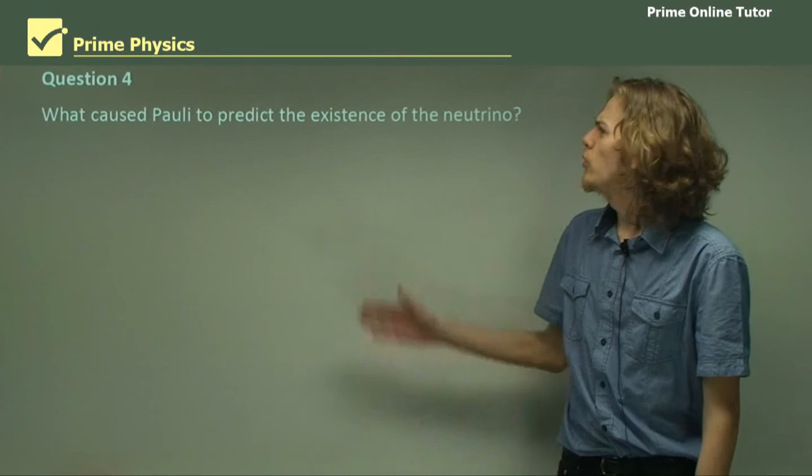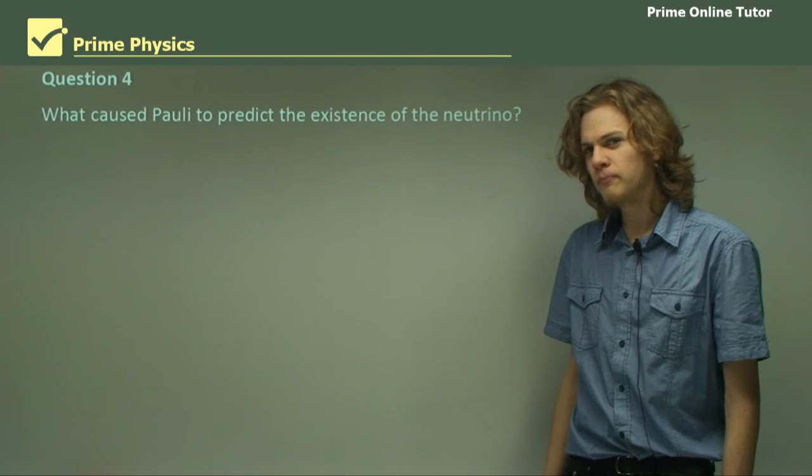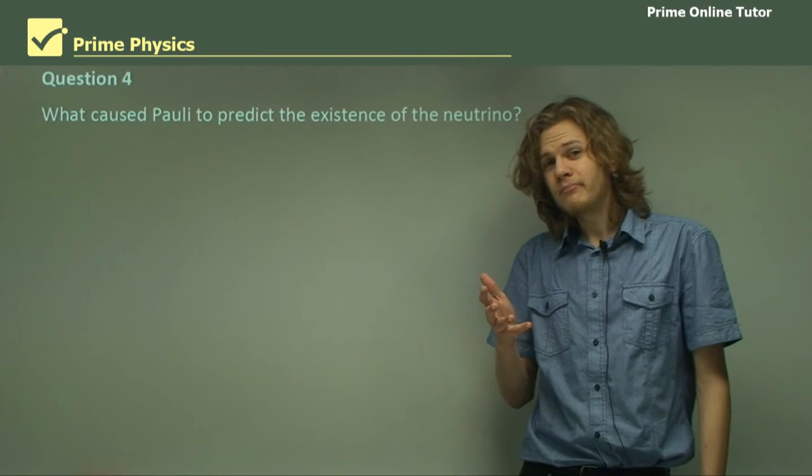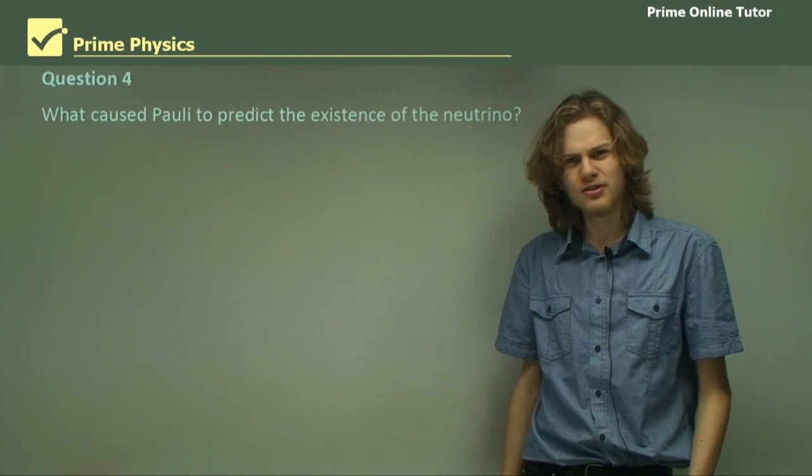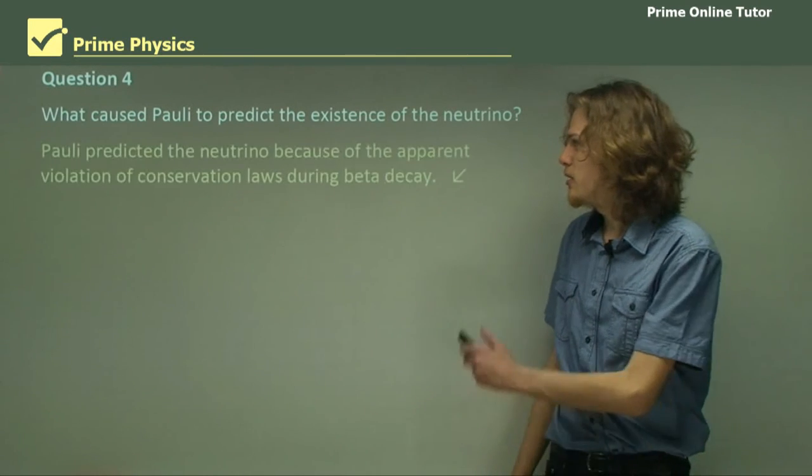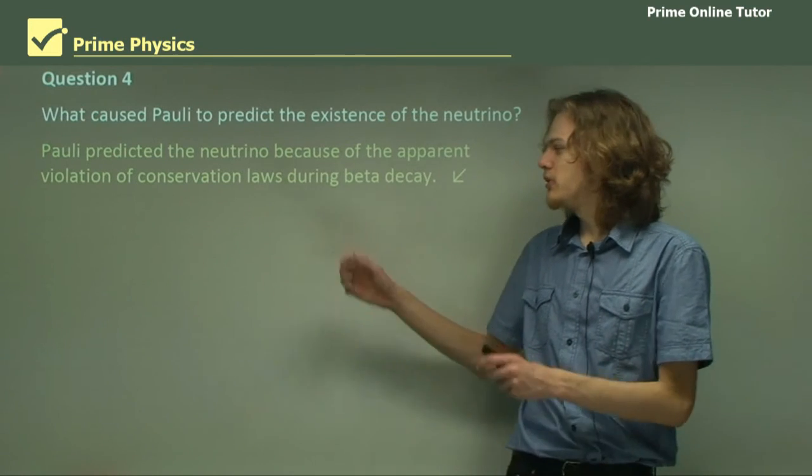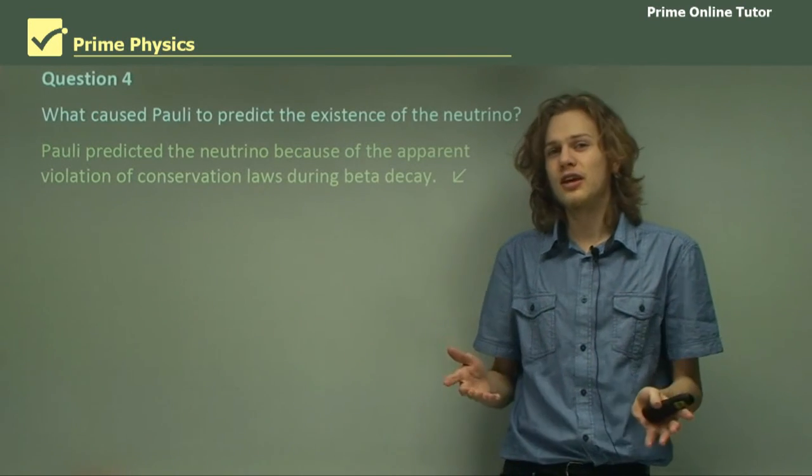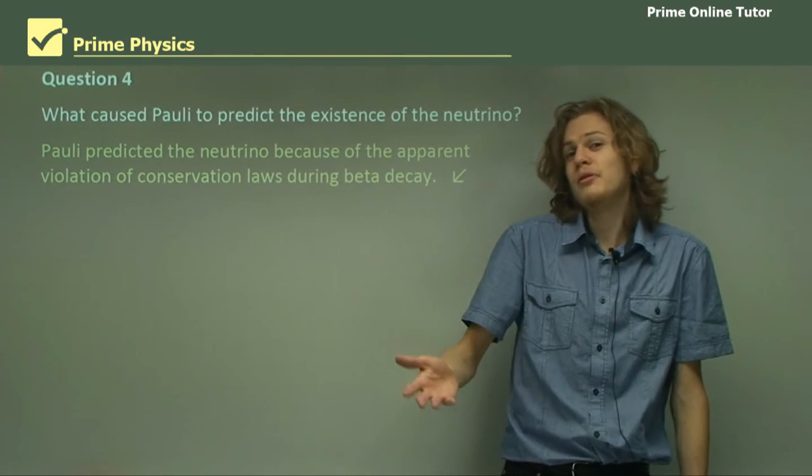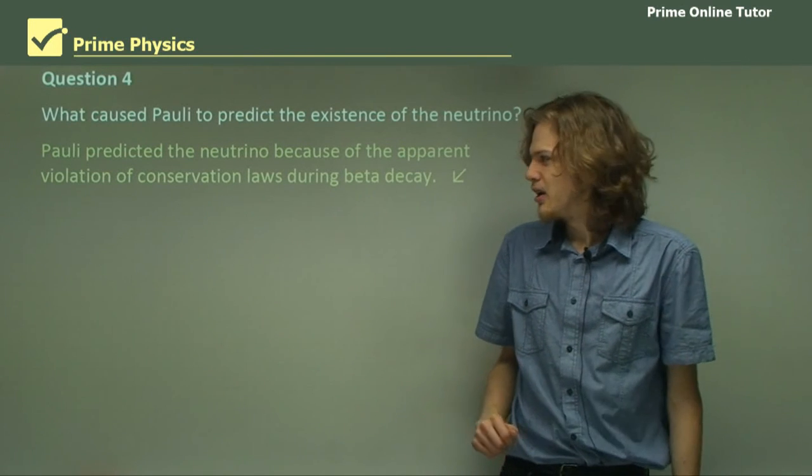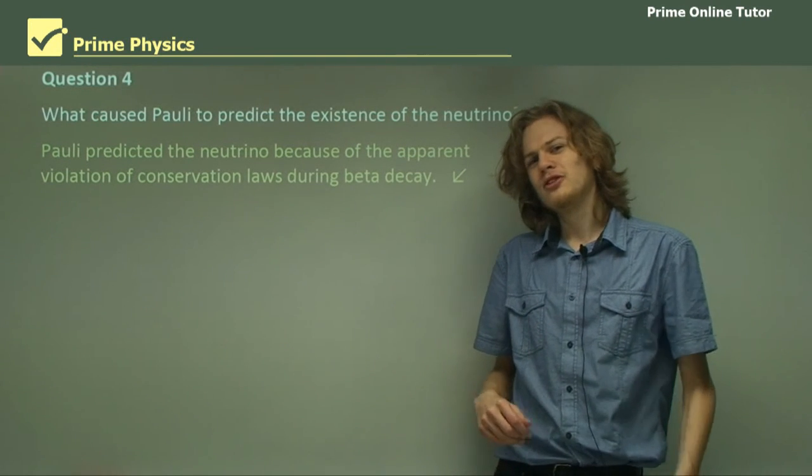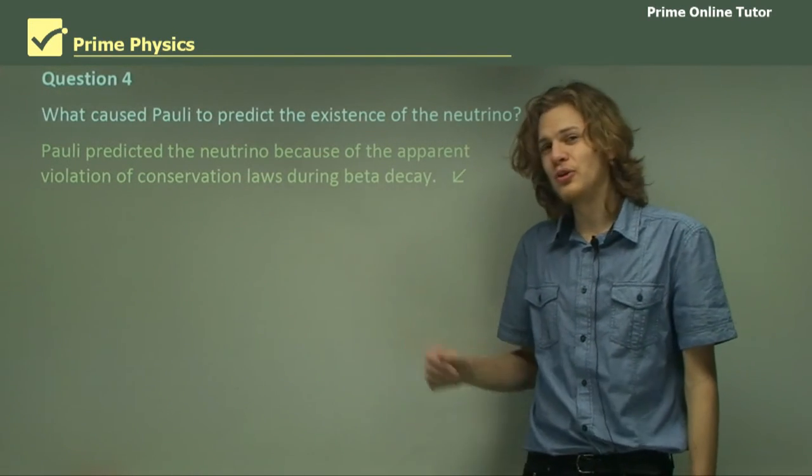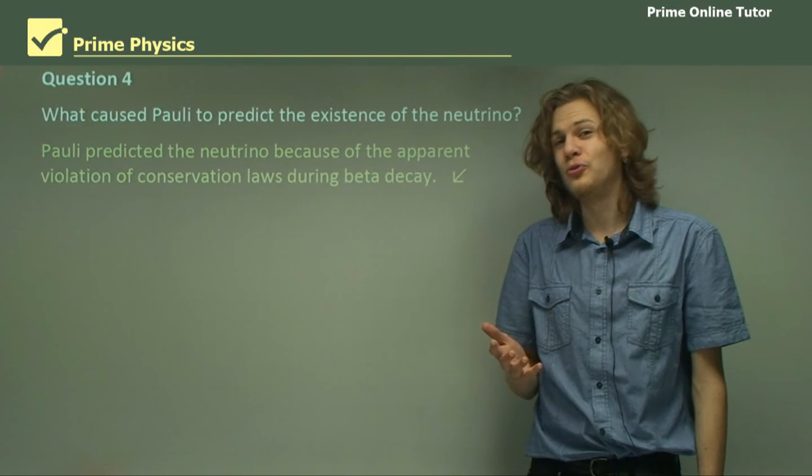Question four: what caused Pauli to predict the existence of the neutrino? Why did the neutrino need to exist? The answer here is because energy was missing from a particular kind of process. Can you remember which one? That's right, it was beta decay. Pauli predicted the neutrino because the beta particles during beta decay didn't have enough energy. He wasn't actually very proud of himself for saying that, because he thought it would be impossible to ever detect.